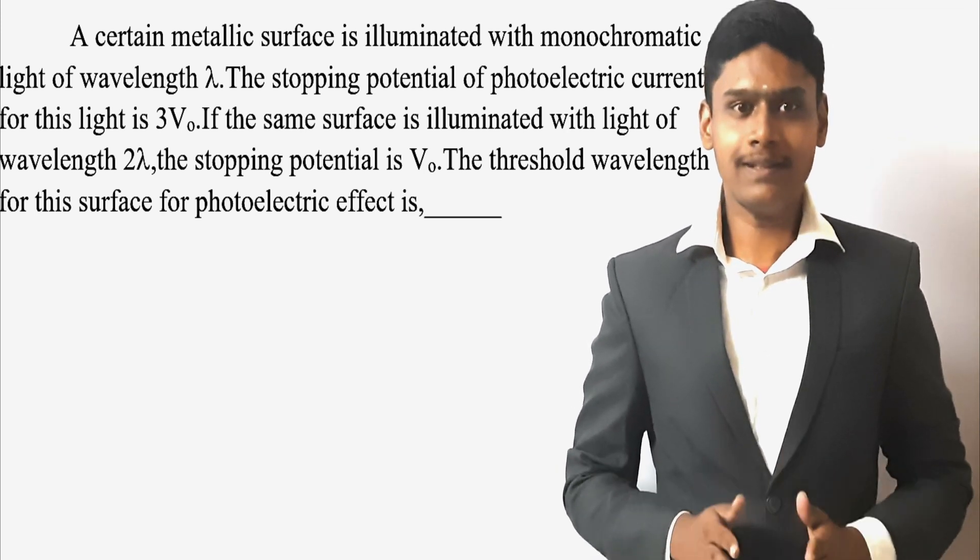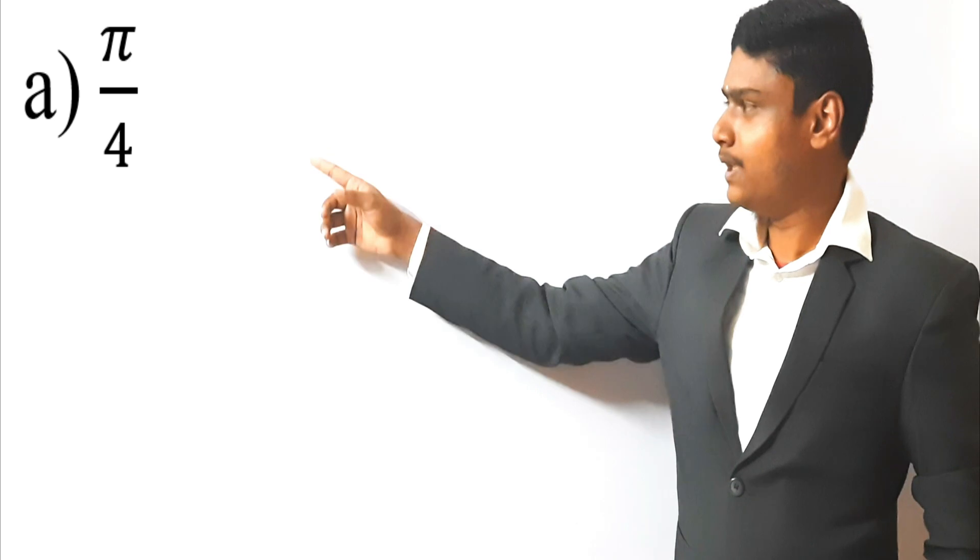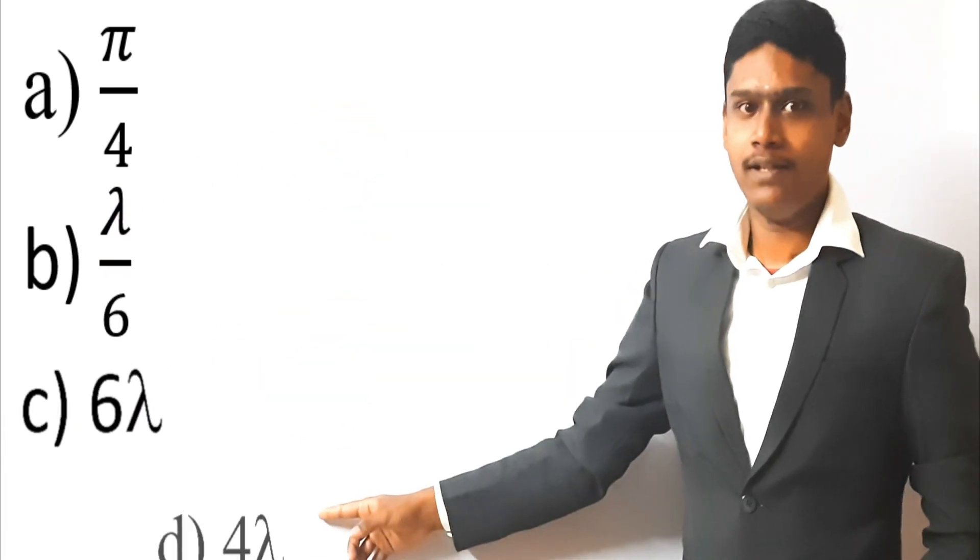The threshold wavelength for this surface for photoelectric effect is. Options given are: a) lambda by 4, b) lambda by 6, c) 6 lambda and d) 4 lambda.